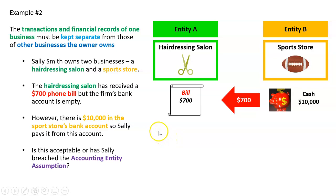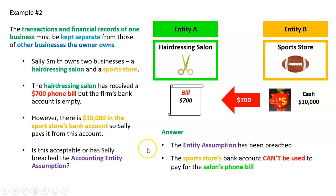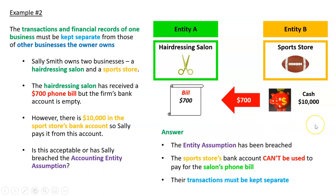Is this acceptable? No — the entity assumption has been breached. The sports store's bank account can't be used to pay for the salon's phone bill. Their transactions are separate. They should have separate accounting records, separate bank statements, and separate financial reports. That's a breach of the entity principle.